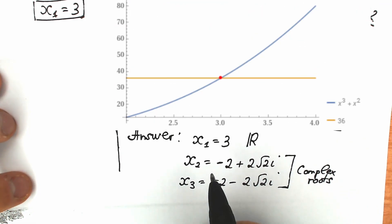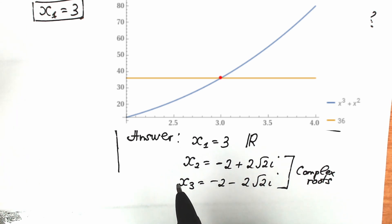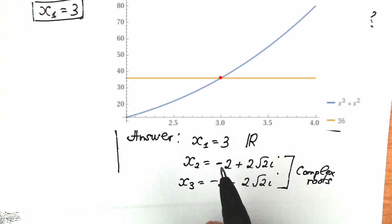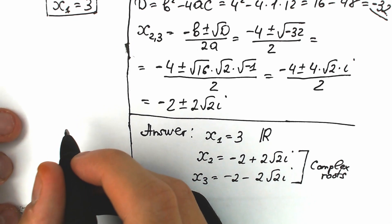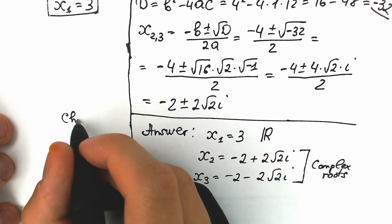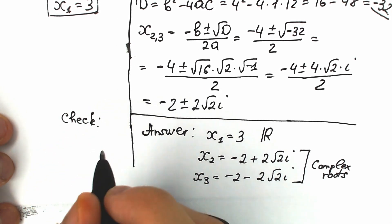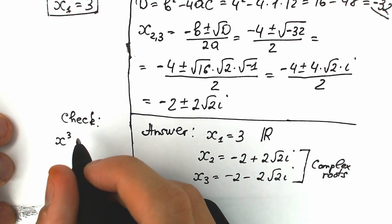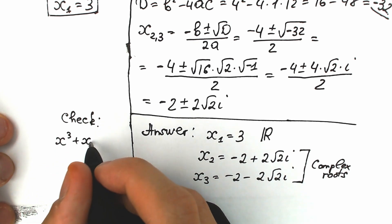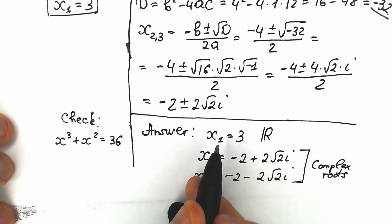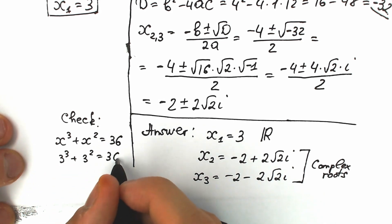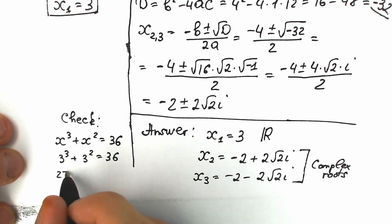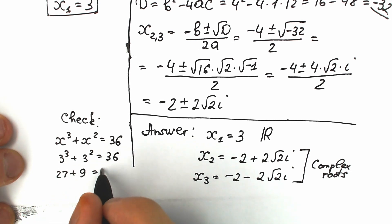Looking at the graph, you can see only one point of intersection, confirming one real solution. Let's verify: when x = 3, we get 3³ + 3² = 27 + 9 = 36. Absolutely correct! Many students solve this by inspection because it's an obvious root.